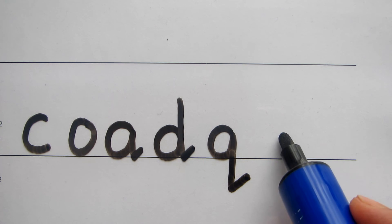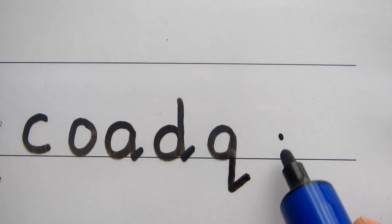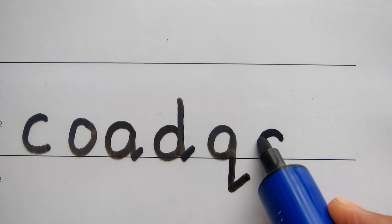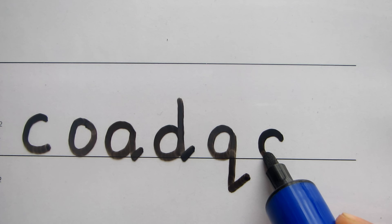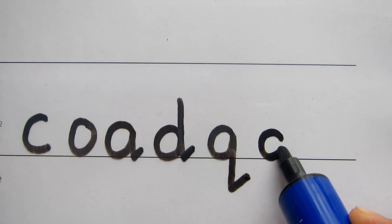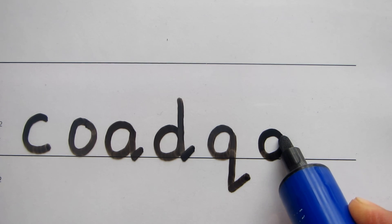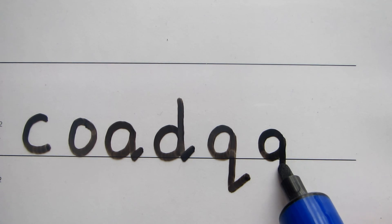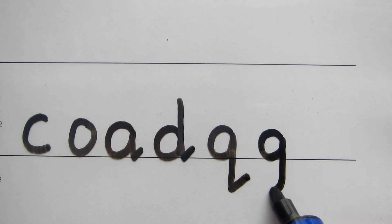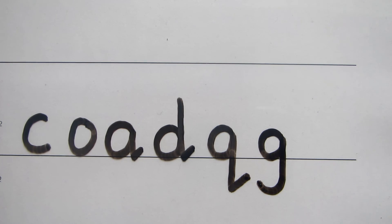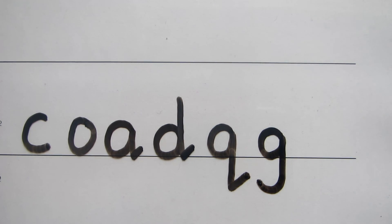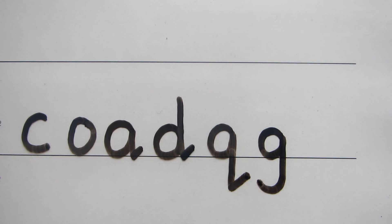And finally, the letter G: start there, up, around, back to the line, go back to where you started, stop there, straight down, and curve around. The lowercase G. I hope that was helpful — thanks for watching, bye-bye for now.